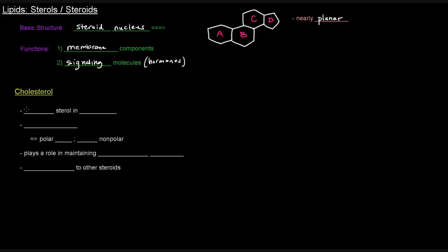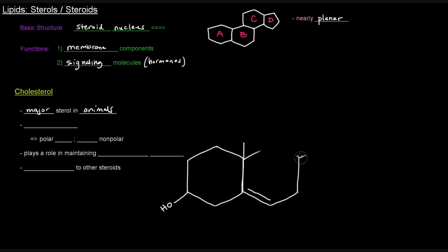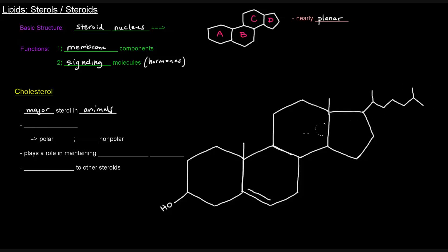The major sterol in animals is cholesterol, and its structure looks like this. It is an amphipathic molecule, which means it has polar and nonpolar portions. Its polar portion is actually pretty small — it's just this OH group here. The rest of the molecule is just hydrocarbons, carbons and hydrogens, so the rest of it is nonpolar, which is why it can actually be a membrane component.